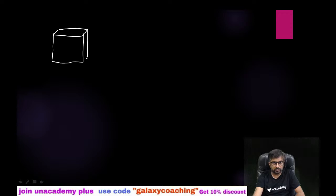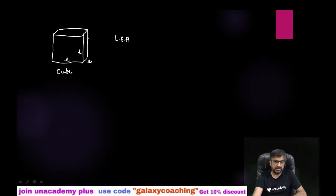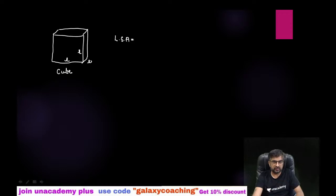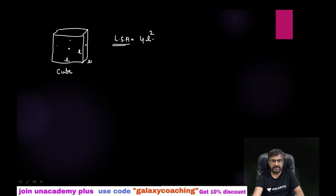I think you all have done this before, but we are doing revision. This is a cube, and in a cube, length, breadth and height are all the same. Lateral surface area means the area of the four walls — like if you are sitting in a room and finding the area of the four walls. For a cube, one face area is l squared and four such faces are there, so lateral surface area is 4l squared.